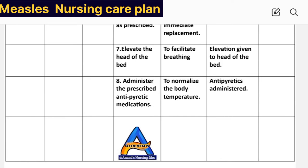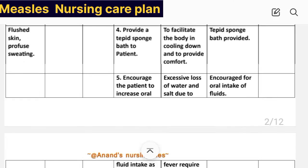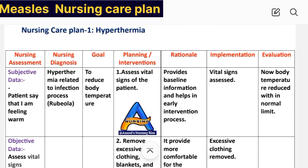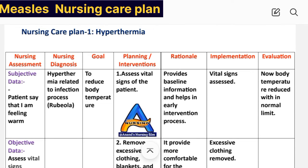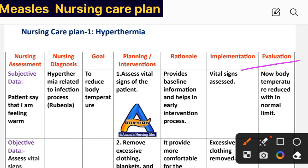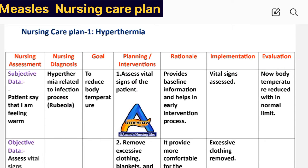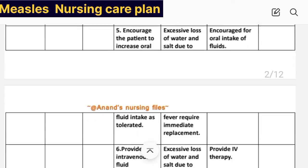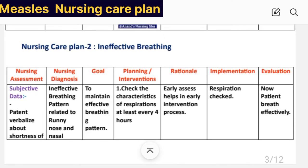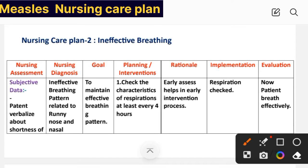After writing these interventions, we write the evaluation. Evaluation: body temperature reduced within normal limits. This completes nursing care plan number one. Now, nursing care plan number two for measles — ineffective breathing.